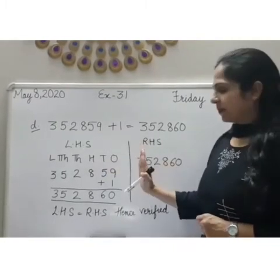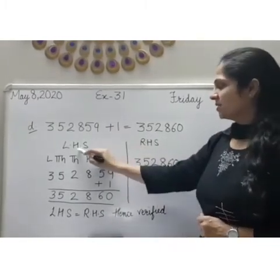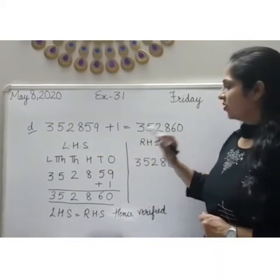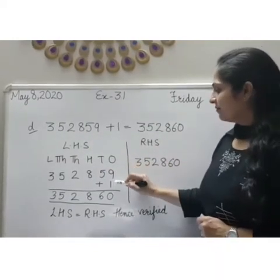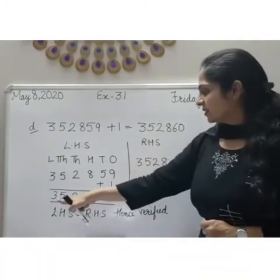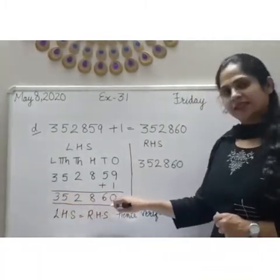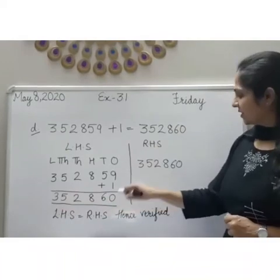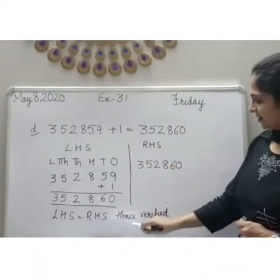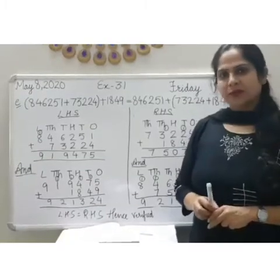Again divide the page into two equal parts. This side is left hand side and this side is right hand side. We will add 1 to the number and we will get the sum that is 3,52,860, which is equal to RHS. Hence verified. Now Part E.